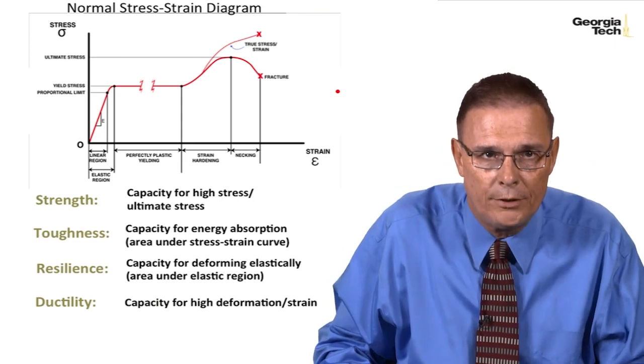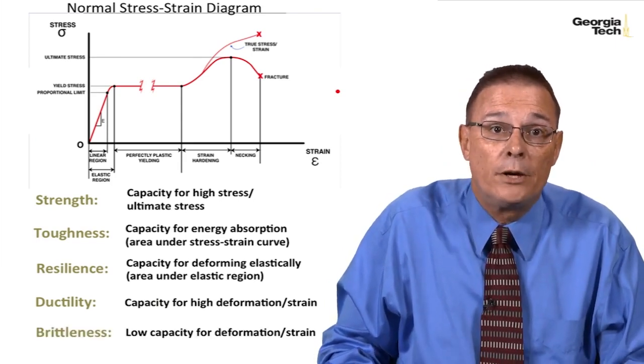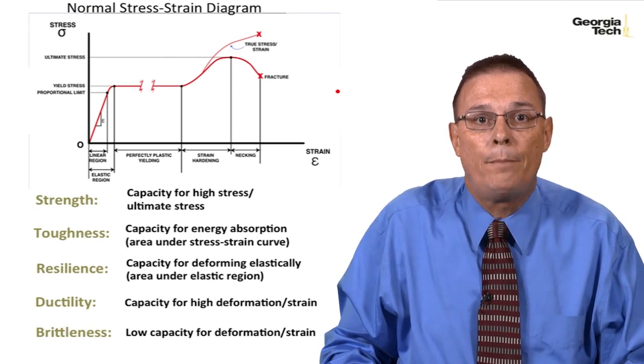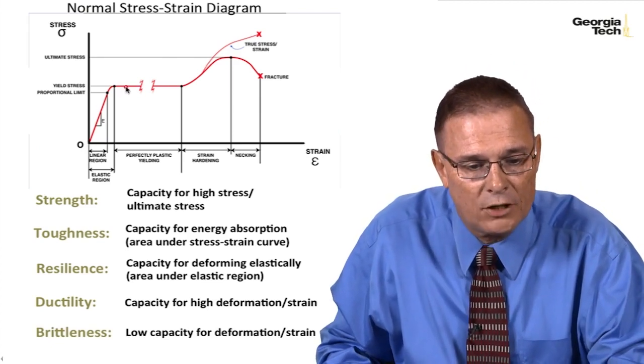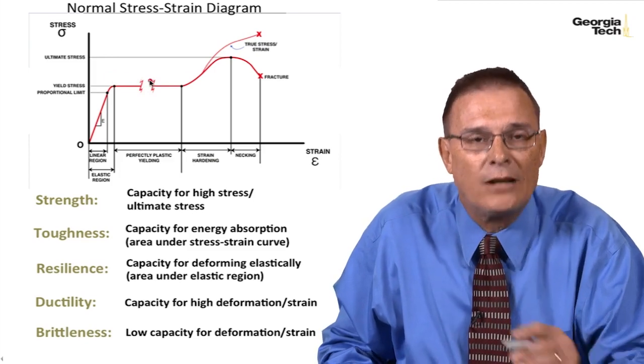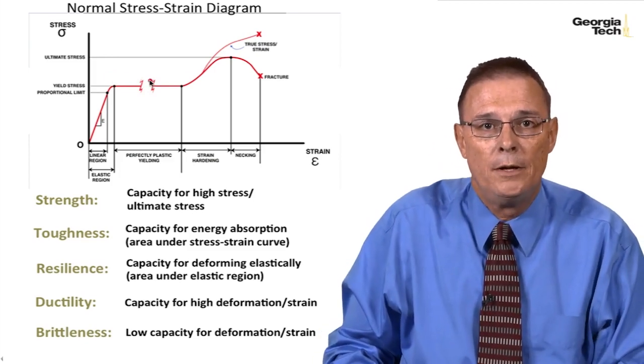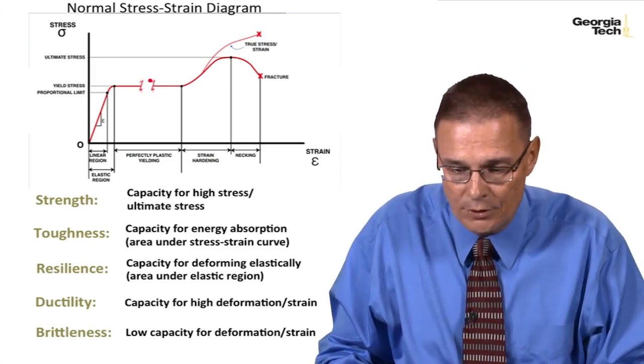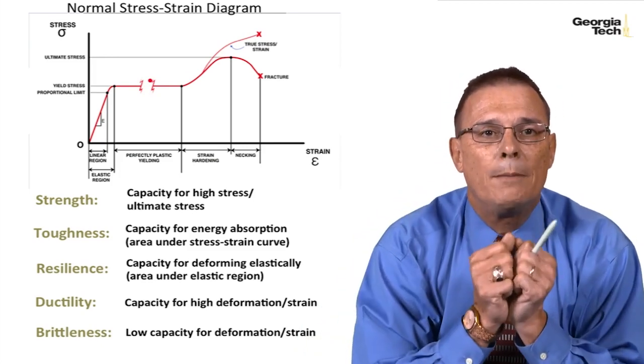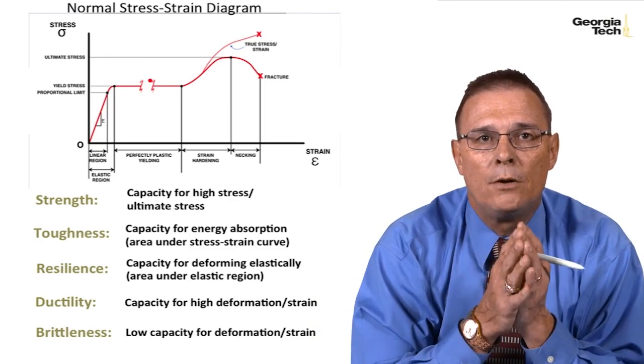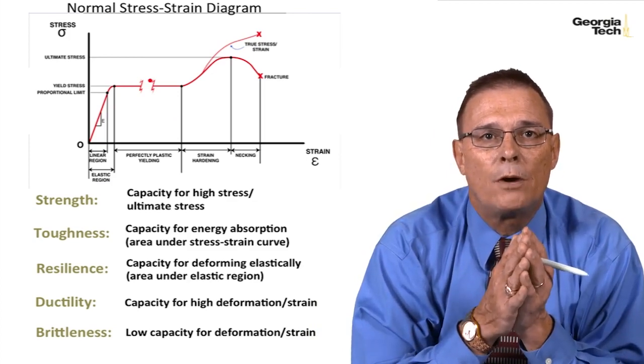Those are all ductile materials. And then we call a brittle material one that has very low capacity for deformation or strain. As we go up and we get into this plastic region, it fractures a lot quicker than a ductile material would do. Some examples of that would be like concrete or glass or cast iron or ceramics. So those are some typical material properties.